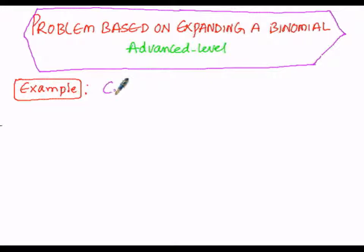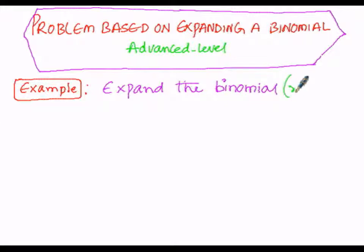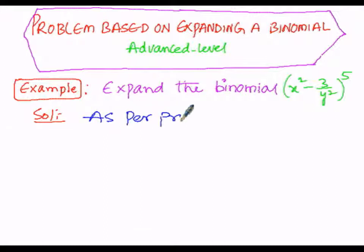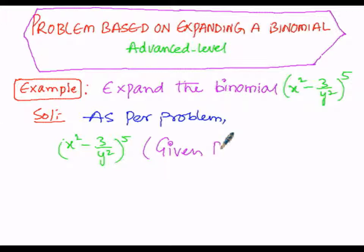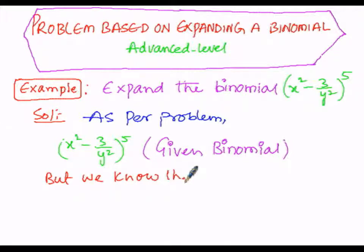Now we are performing an example under the expansion of a binomial. Expand the binomial (x² − 3/y²)^5. The solution starts: the given binomial is (x² − 3/y²)^5.